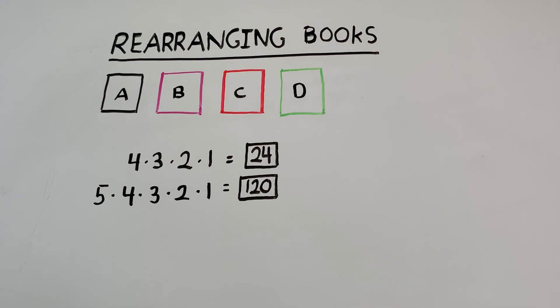So now that we know that there are six ways to arrange three books on a shelf, 24 ways to arrange four books on a shelf, and 120 ways to arrange five books on a shelf, let's see if we can generalize the problem and figure out how many ways we can arrange n different books on a shelf.